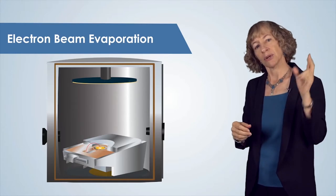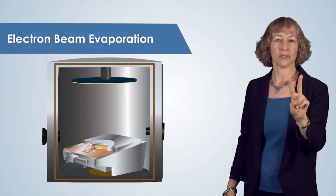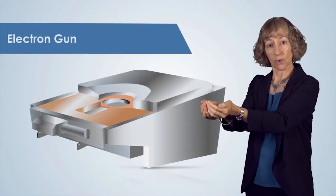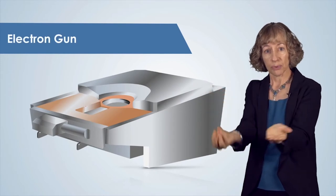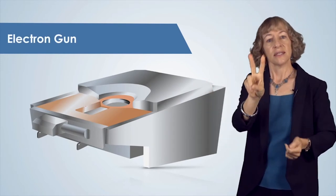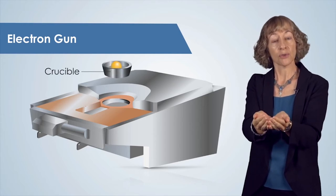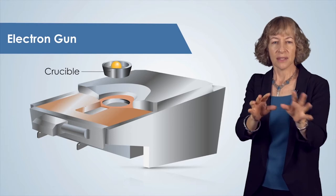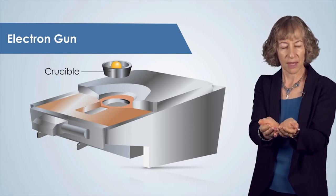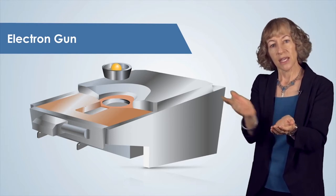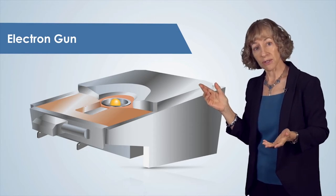An e-beam evaporator has two main components. First is the electron source or electron gun, which produces the beam of electrons. Second, the crucible is where the source material that we want to evaporate is contained. This is like the boat for thermal evaporation. Here is a crucible with gold in it for the source material.